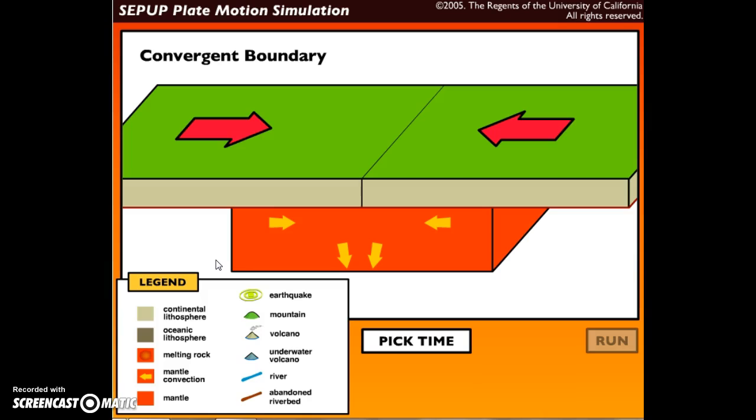You're going to be identifying the geologic features like what landforms and the geologic events, like a volcano erupting or a volcano being formed, an earthquake. Those are events. Geologic features maybe the mountain forming.